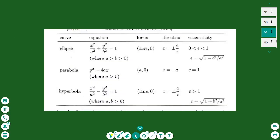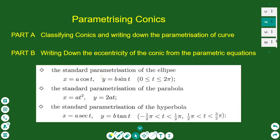The equations of the conics in standard position are shown in this table. For the ellipse we have x² / a² + y² / b² = 1. For the parabola we have y² = 4ax, and for the hyperbola x² / a² - y² / b² = 1. The parametric equations for each conic: for the ellipse, x = a cos t, y = b sin t; for the parabola, x = at², y = 2at; and for the hyperbola, x = a sec t, y = b tan t.